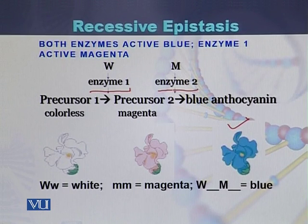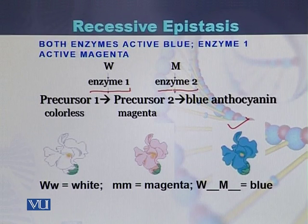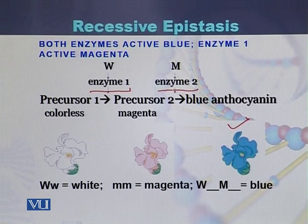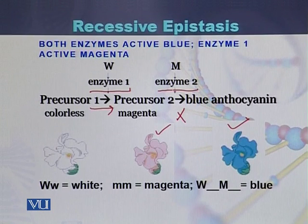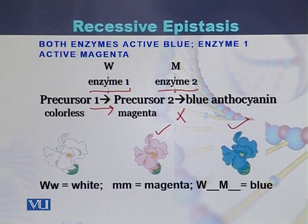In the presence of anthocyanin, the color of the flower will be blue. However, if enzyme 2 does not function, precursor 2 will not be converted into blue anthocyanin, and the color of the flower will be pink or magenta. This means precursor 1 is converted into precursor 2 — colorless is converted into magenta — but magenta color will not be converted into blue anthocyanin.